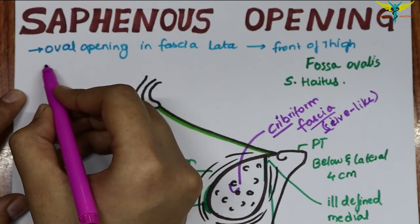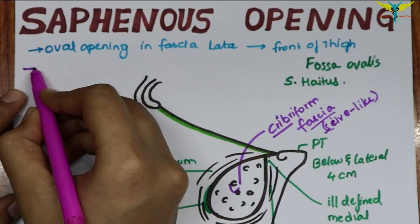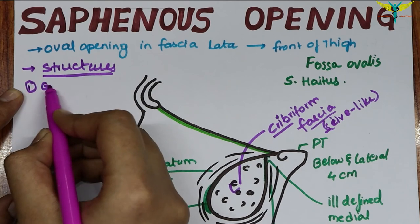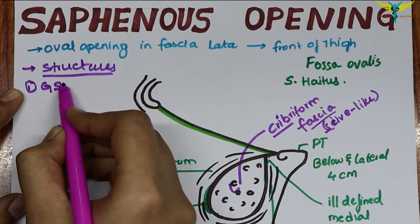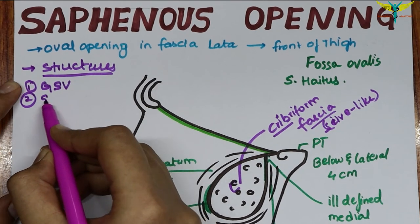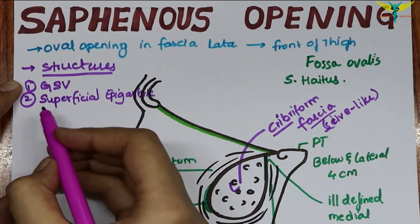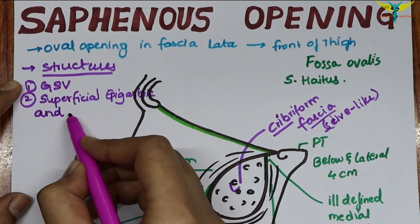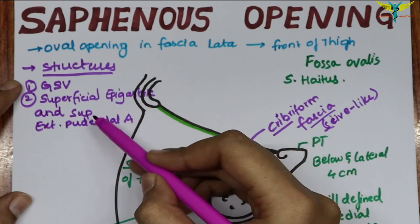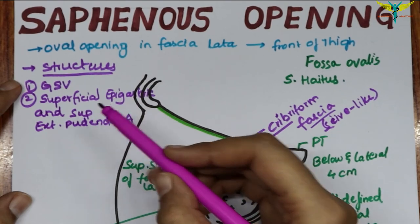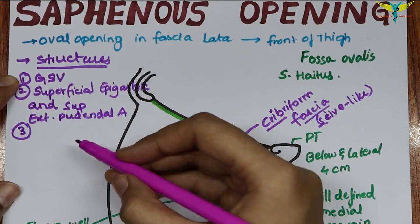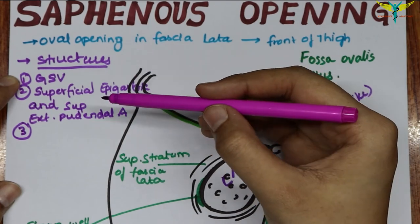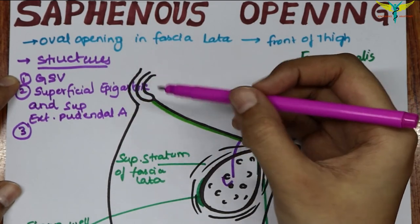The structures passing through the saphenous opening are the great saphenous vein, the superficial epigastric and superficial external pudendal arteries — which are branches of the femoral artery — and a few lymph vessels that connect the superficial and deep inguinal lymph nodes.